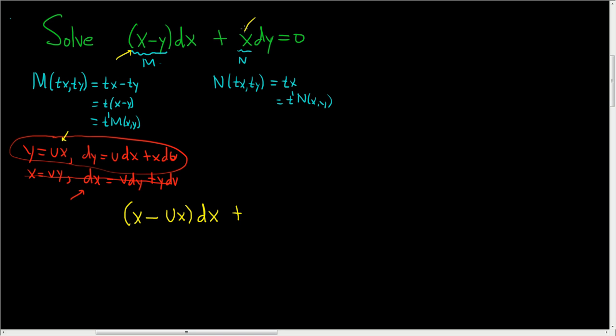and then we have the x here, so x and then we have the dy. And dy is this right here, udx plus xdu. So udx plus xdu. It's very easy to mess these up and this is equal to zero.